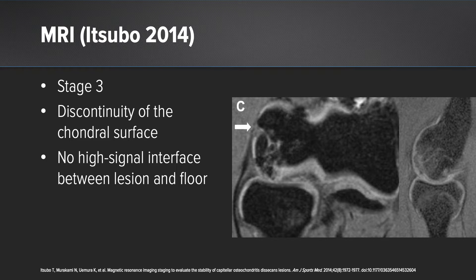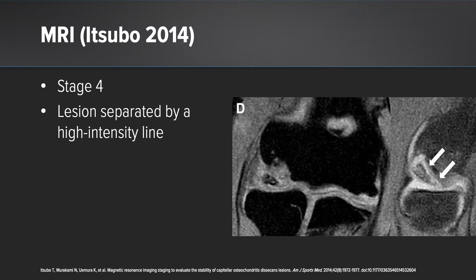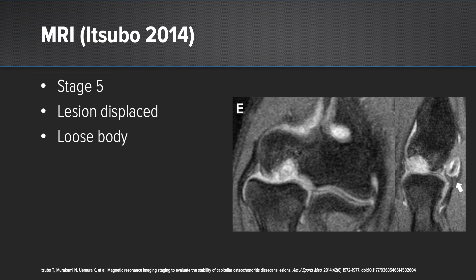Stage three has discontinuity of the chondral surface, but there's no signal in the interface between the lesion and the subchondral bone. Stage four has separation with a high intensity line between the subchondral bone and the lesion. And in stage five, the lesion is displaced or has become a loose body.